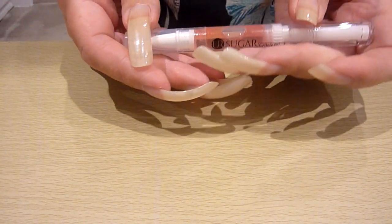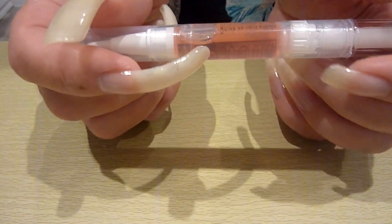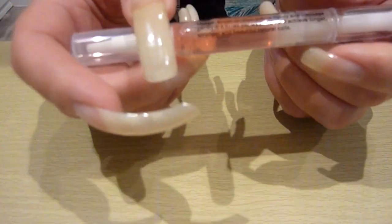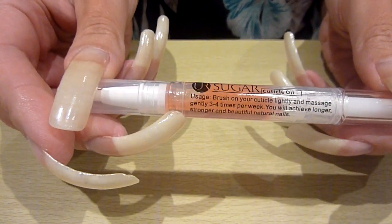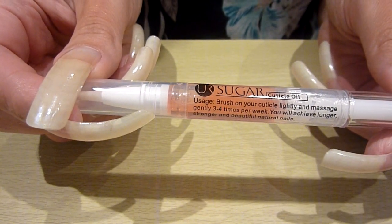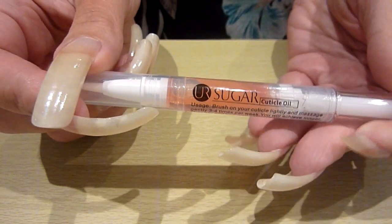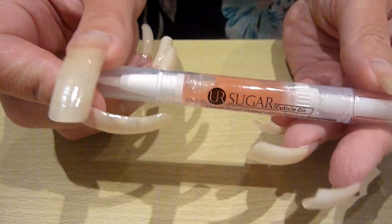Hello there. I've got another review today from the Born Pretty Store. This is one of their ranges. It's by UR Sugar. It's a cuticle oil nail pen.